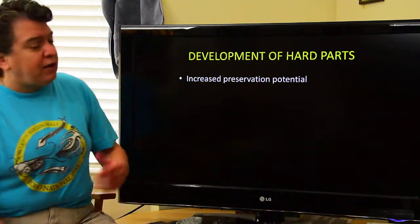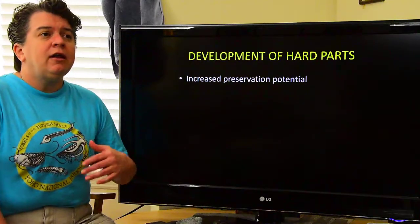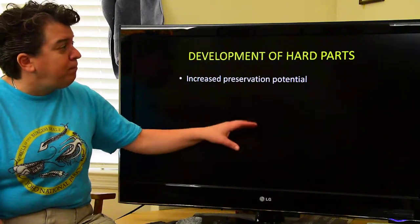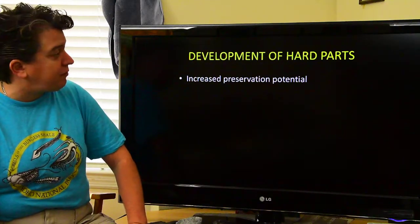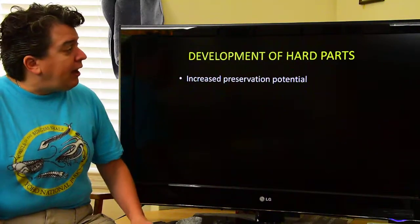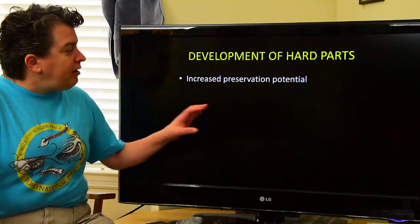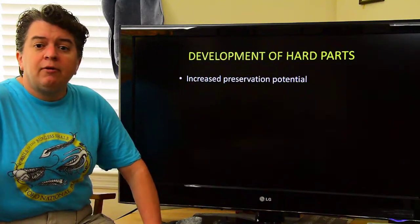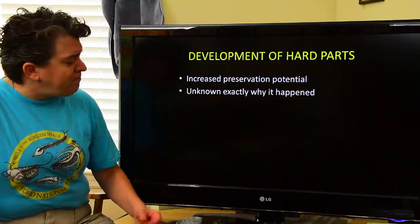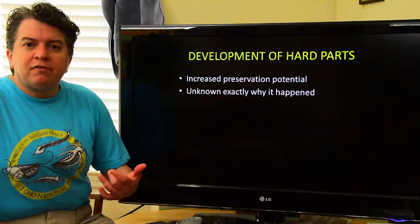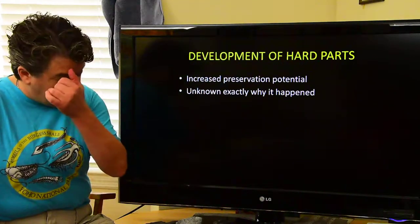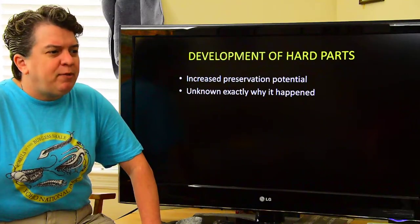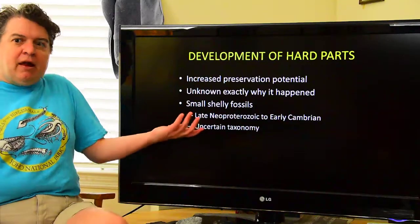One of the big things that occurred during the Paleozoic that makes it different from the life forms in the Precambrian is we see a major development of hard parts — shells and things like that. This important development increases the preservation potential of fossils, so we start seeing more life forms because they're better preserved. And we don't exactly know why it happened, why life began developing hard parts, but it happened.